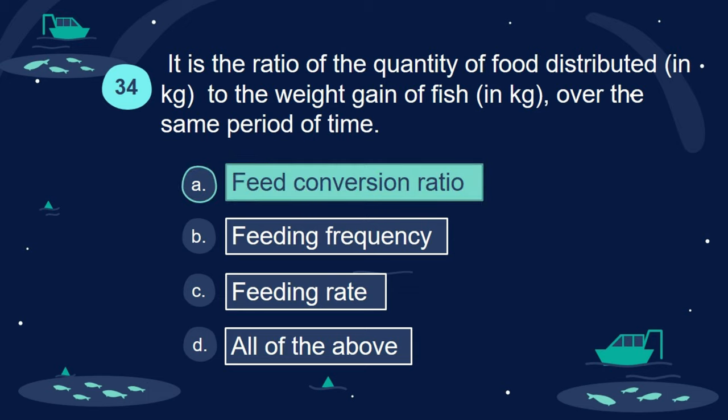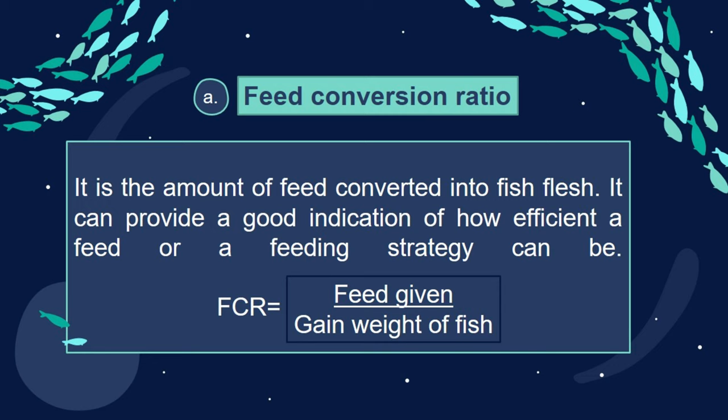Answer: A. Feed conversion ratio. It is the amount of feed converted into fish flesh. It can provide a good indication of how efficient a feed or feeding strategy can be. FCR equals feed given divided by gain weight of fish.